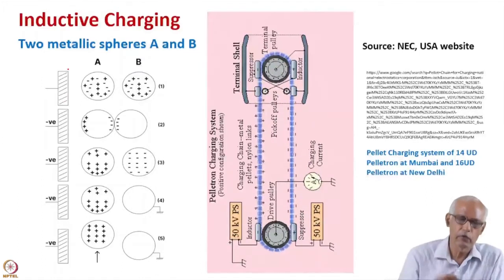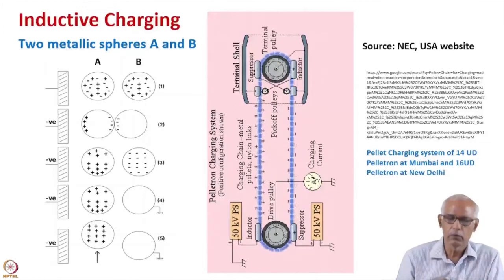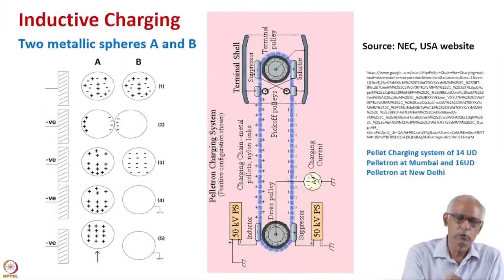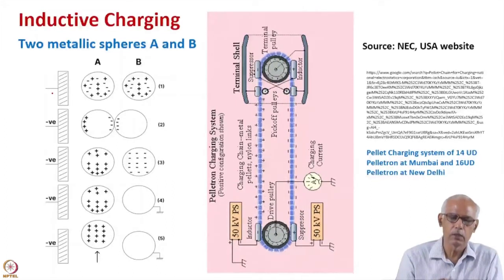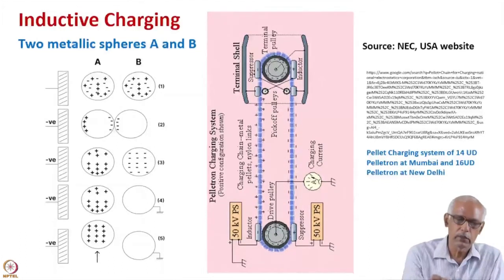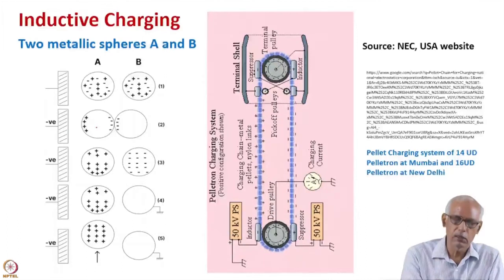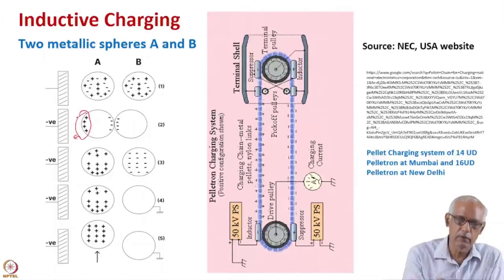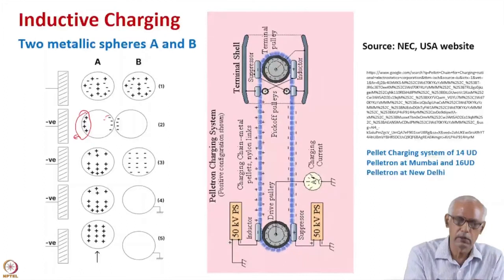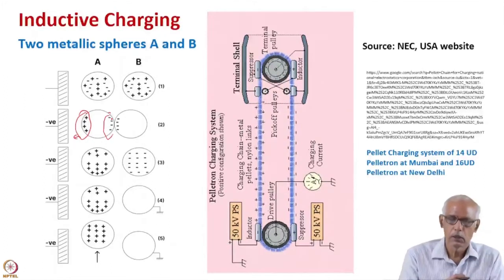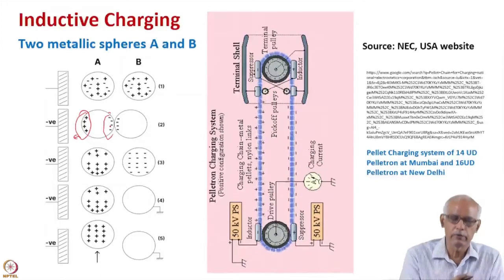You put an electrode here where you can later apply the voltage. If you want to transfer positive charge, you have to apply negative voltage on this inductive system. If you apply negative voltage on this inductor, the positive charge in the first sphere will go to this side and be collected here. Then if you bring this second sphere, which was neutral earlier, close to the first one after applying the negative voltage, they come in contact.